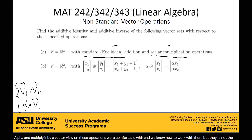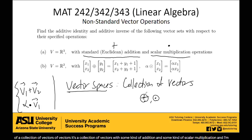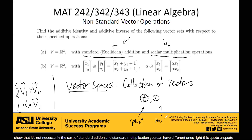But these are not the only operations that can work on your vector space. So what's a vector space? A vector space, for lack of a better word, is a collection of vectors with some kind of addition and some kind of scalar multiplication. I'm going to use these stranger symbols — a plus sign with a circle around it and a multiplication sign with a circle around it — to show that it's not necessarily the standard addition and standard multiplication.